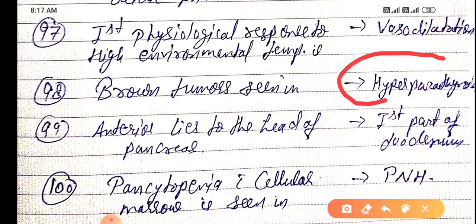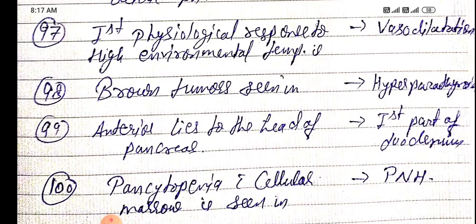Anterior to the head of the pancreas is the first part of the duodenum. When cytopenia with cellular marrow is seen, it is PNH — paroxysmal nocturnal hemoglobinuria. I hope till here it is very clear for you; if you have any queries, you can ask me.